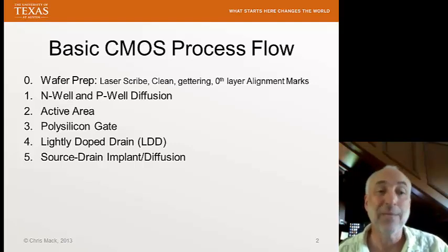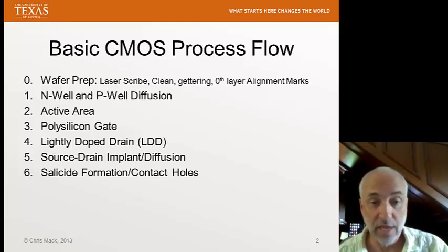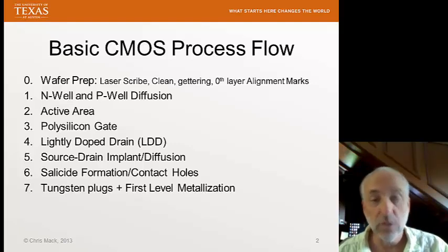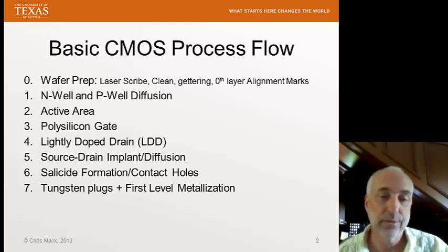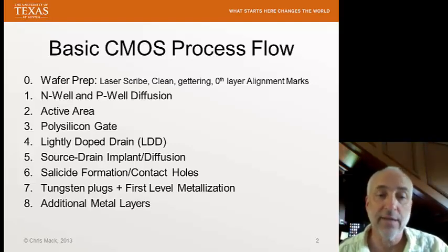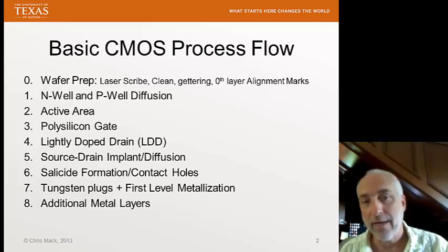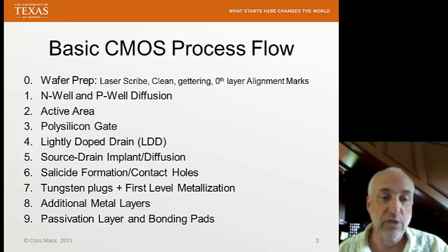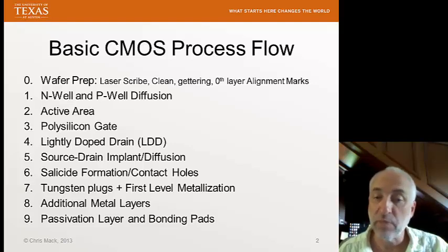From here on out, we're going to connect up the transistors to make a circuit. We're going to form salicide and contact holes, which is where we make our contacts to the source, the drain, and the gate so that we can make electrical contact and wire up our transistors. We'll use tungsten plugs to fill up these contact holes, and then a level of metallization to run wires to connect the transistors together. But one level of metallization is generally not enough — we need additional metal layers, often 2, 4, 6, as high as 10 layers of metal to connect millions or even billions of transistors together. Finally, we'll put a passivation layer over the top and open up that passivation layer for bonding pads when we package the chip and communicate with the outside world.